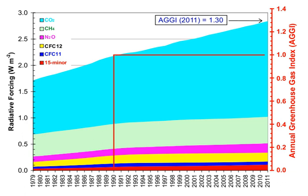A 2014 analysis states that although methane's initial impact is about 100 times greater than that of CO2, because of the shorter atmospheric lifetime, after six or seven decades the impact of the two gases is about equal, and from then on methane's relative role continues to decline. The decrease in GWP at longer times is because methane is degraded to water and CO2 through chemical reactions in the atmosphere. Examples of the atmospheric lifetime and GWP relative to CO2 for several greenhouse gases are given in the following table.